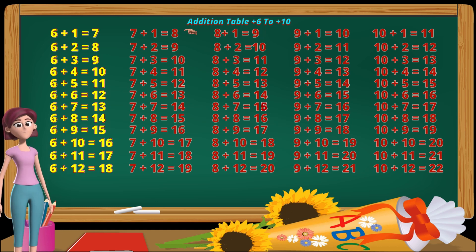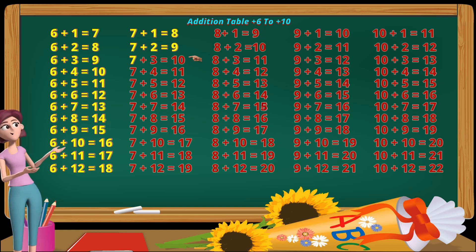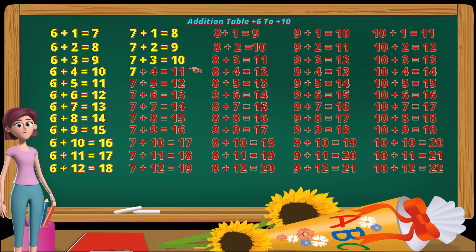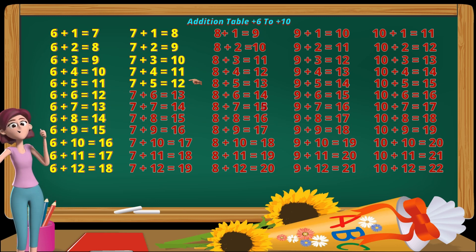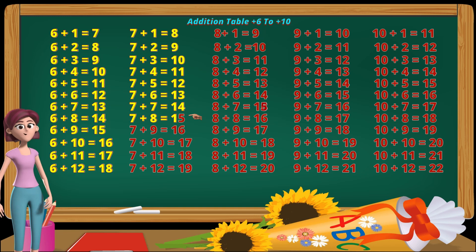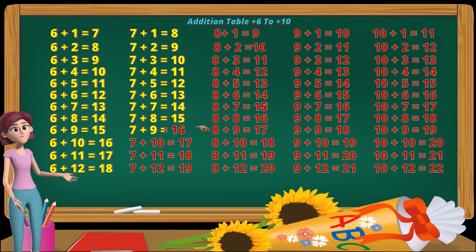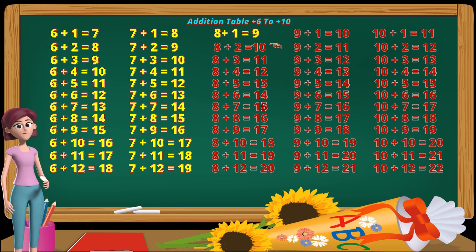Seven plus one equals eight. Seven plus two equals nine. Seven plus three equals ten. Seven plus four equals eleven. Seven plus five equals twelve. Seven plus six equals thirteen. Seven plus seven equals fourteen. Seven plus ten equals seventeen. Seven plus eleven equals eighteen. Seven plus twelve equals nineteen.